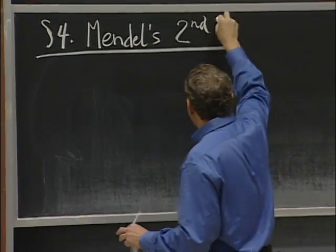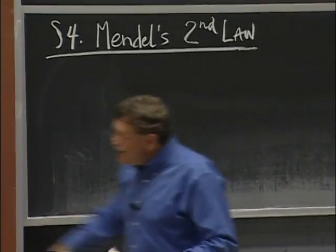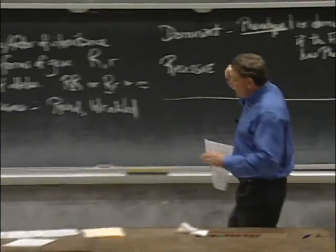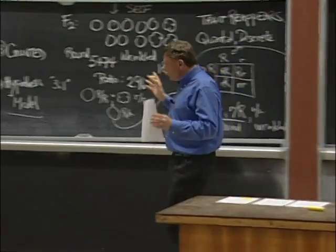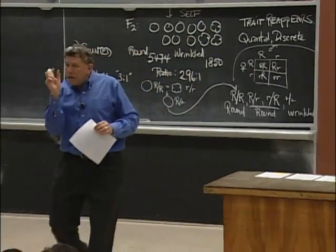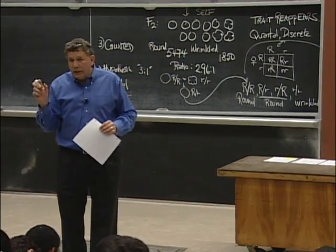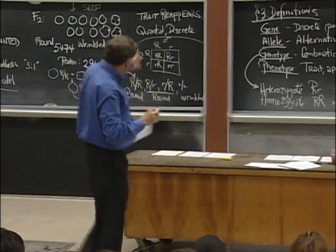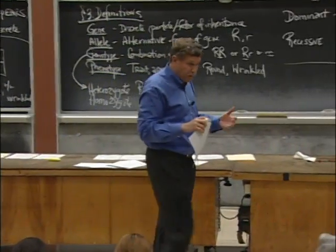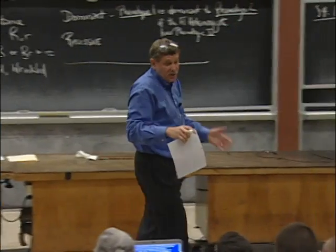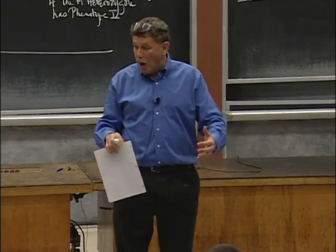The second law. This thing about a three to one ratio, about a single trait being controlled by a pair of alleles, and those alleles being distributed independently to the offspring — the stuff you always learned about Mendel — that's often referred to as Mendel's first law.